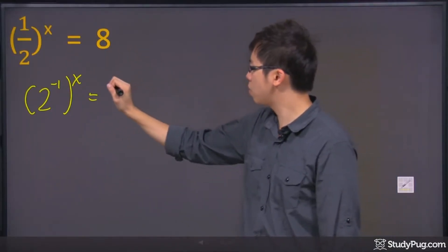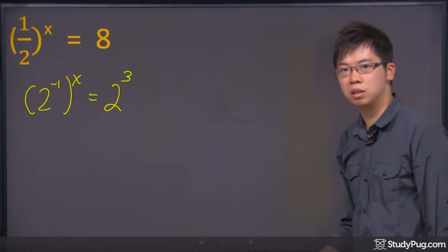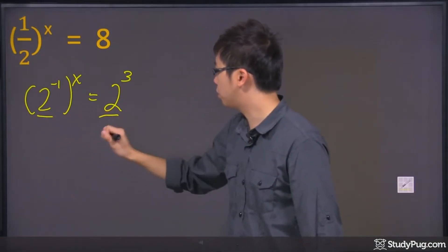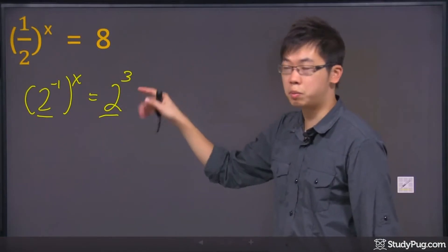The 8, if you remember, 2 to the power of 3 is actually just 8. So once you have the base to be the same, this is just negative x, you can just solve the exponent because it's equal.